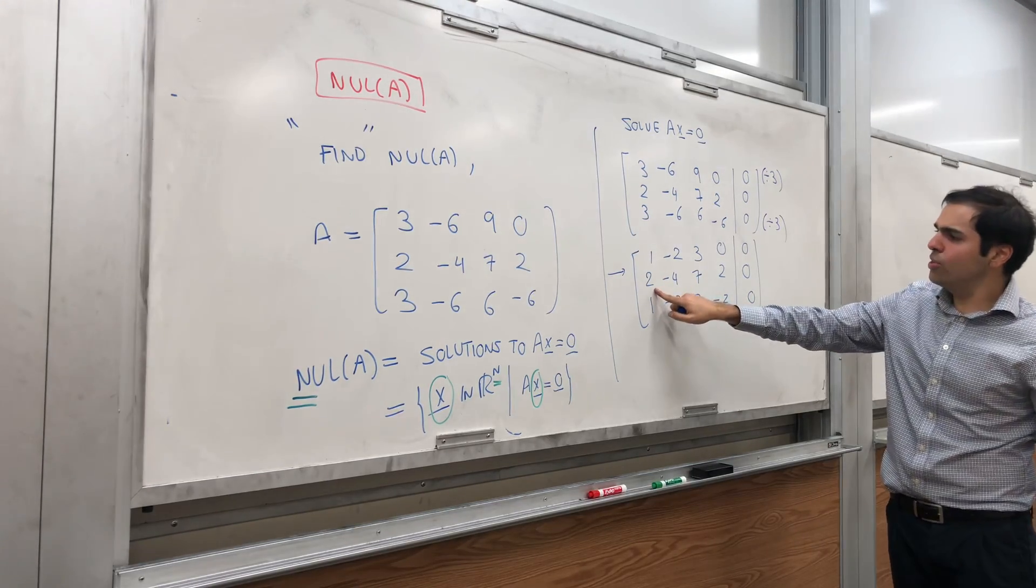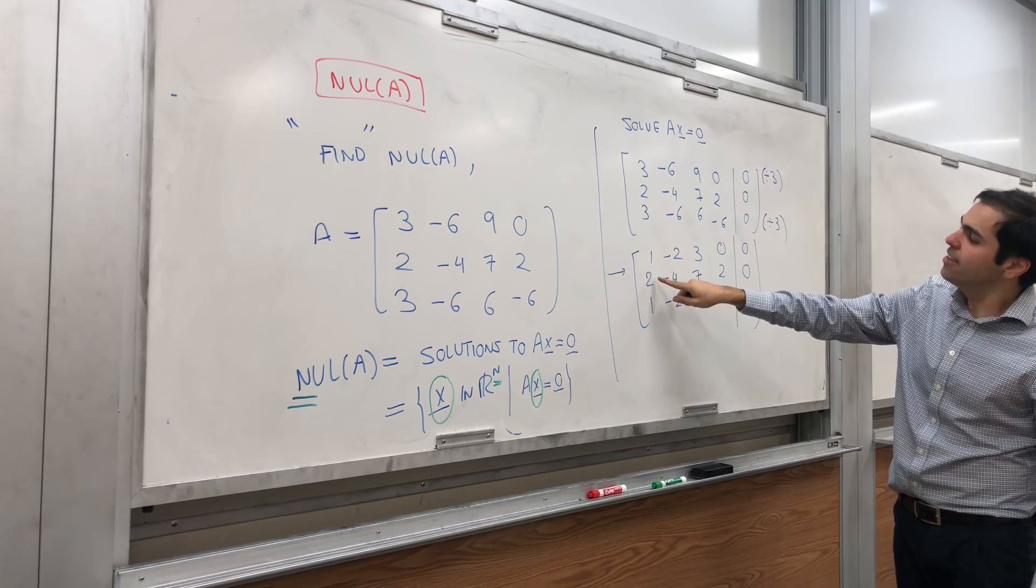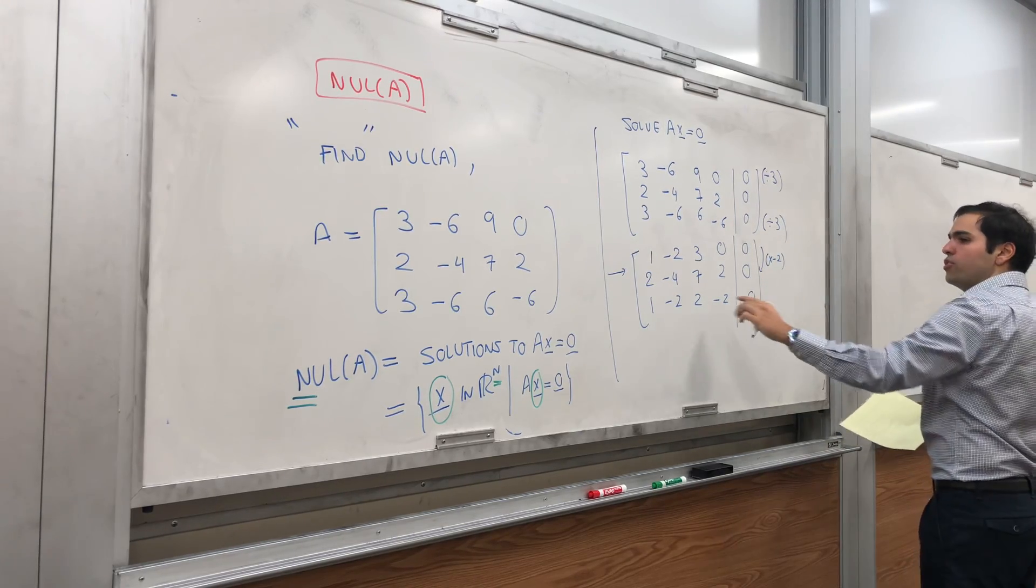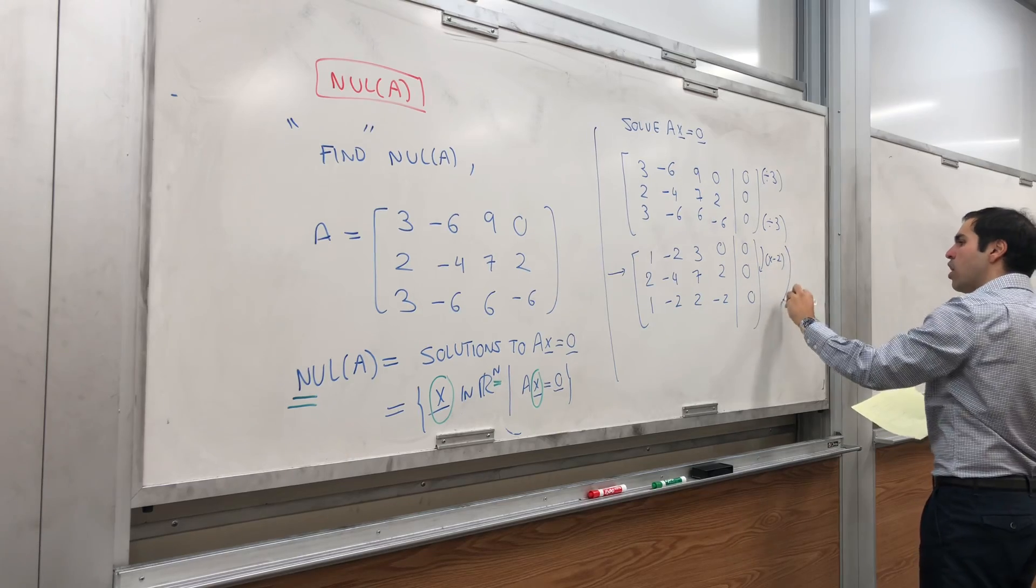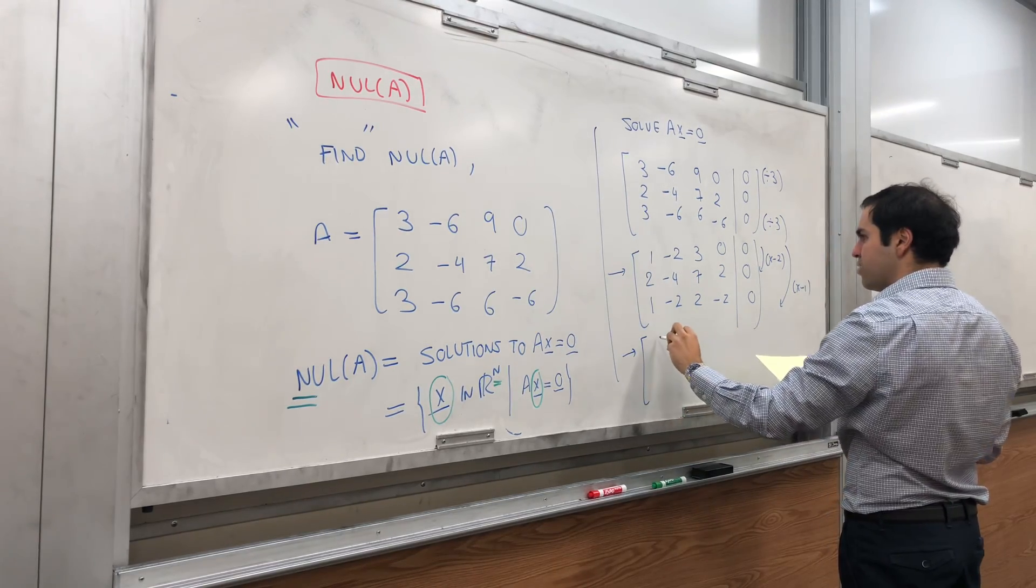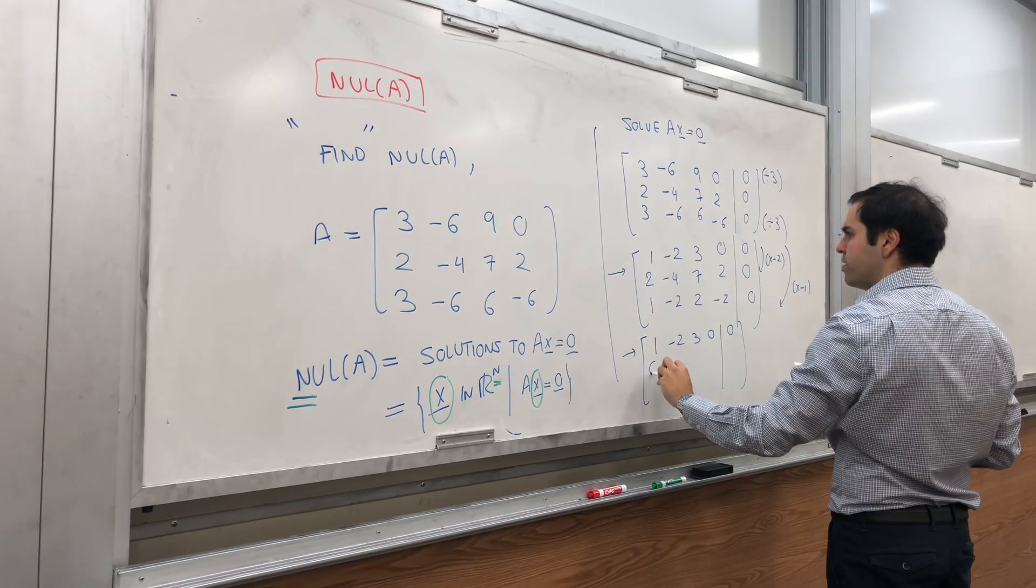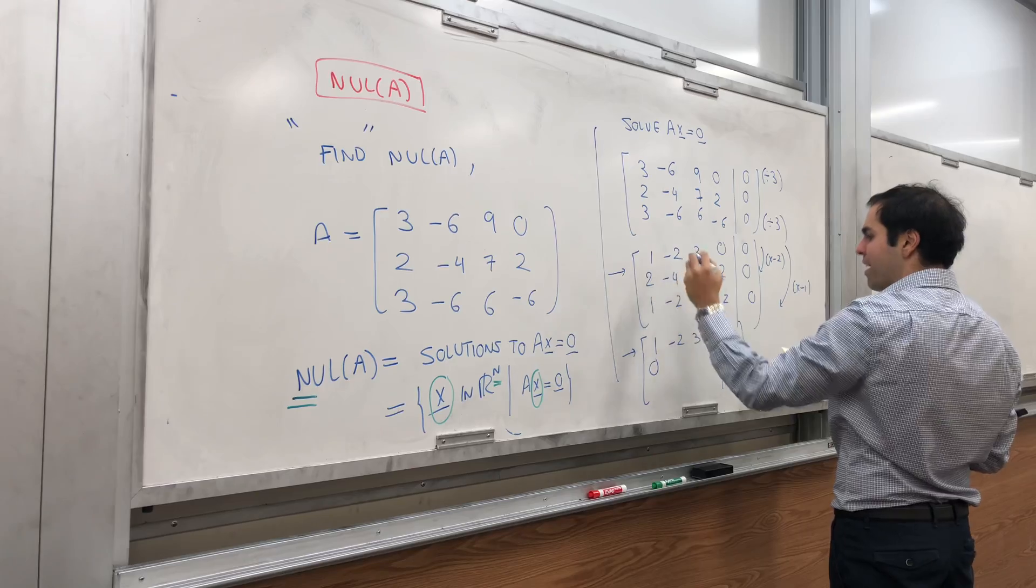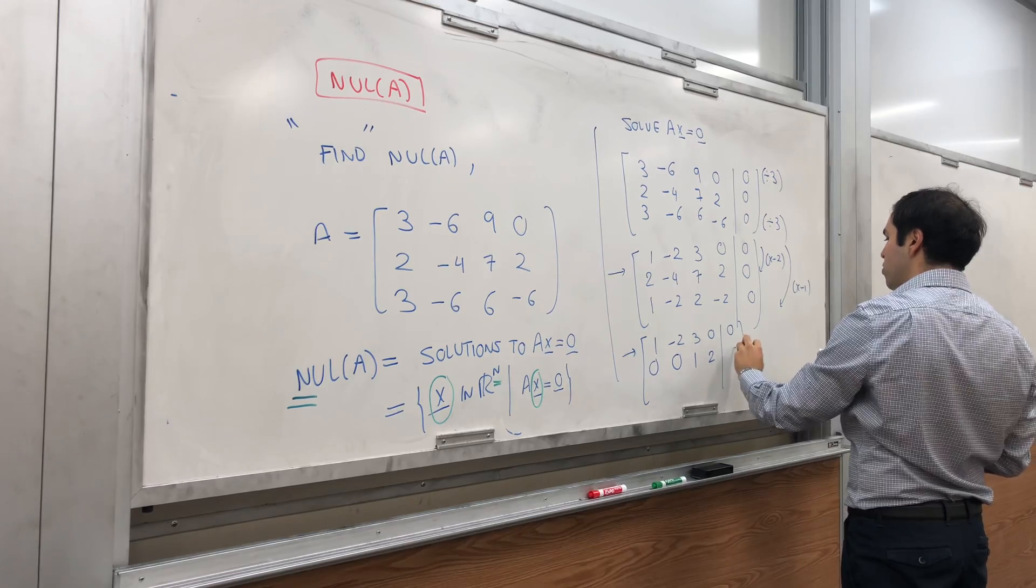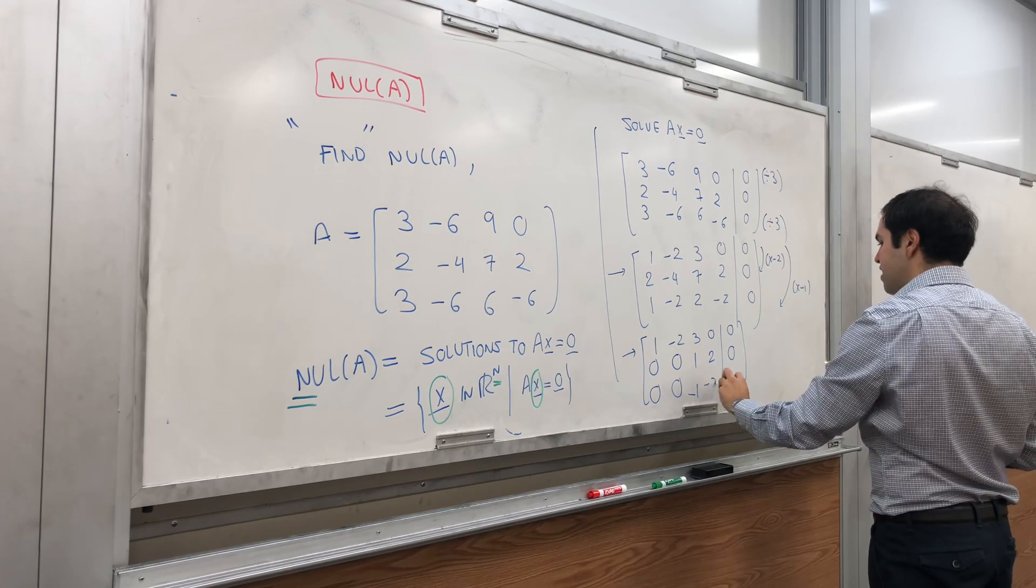And then, what we would like to do, we would like, again, to use the reduced row echelon form, and I come back to that. So, let's get rid of the two, and let's get rid of the one. So, let's subtract two times the first row from the second row, and let's subtract the first row from the third row. So, and then, what you get is, one, minus two, three, zero, zero. And then, let's see, so, zero, and then, let's see, four, minus four, that's zero. And then, minus six, plus seven, that's one. And then, two, zero. And then, zero, zero, minus one, minus two, zero.